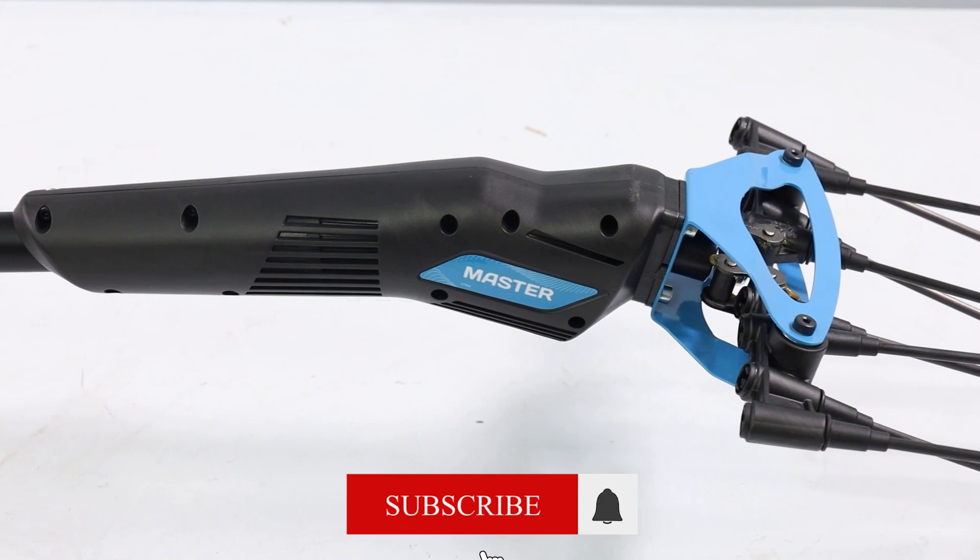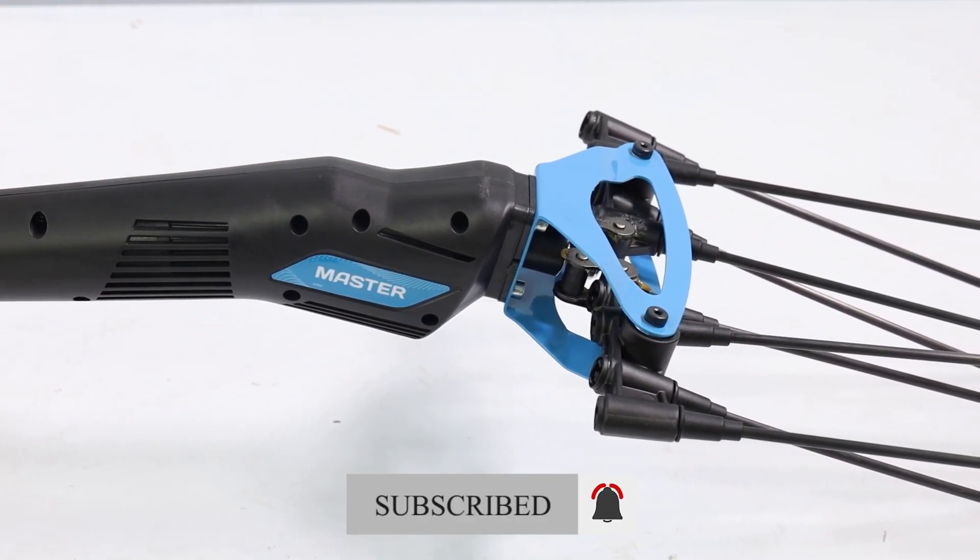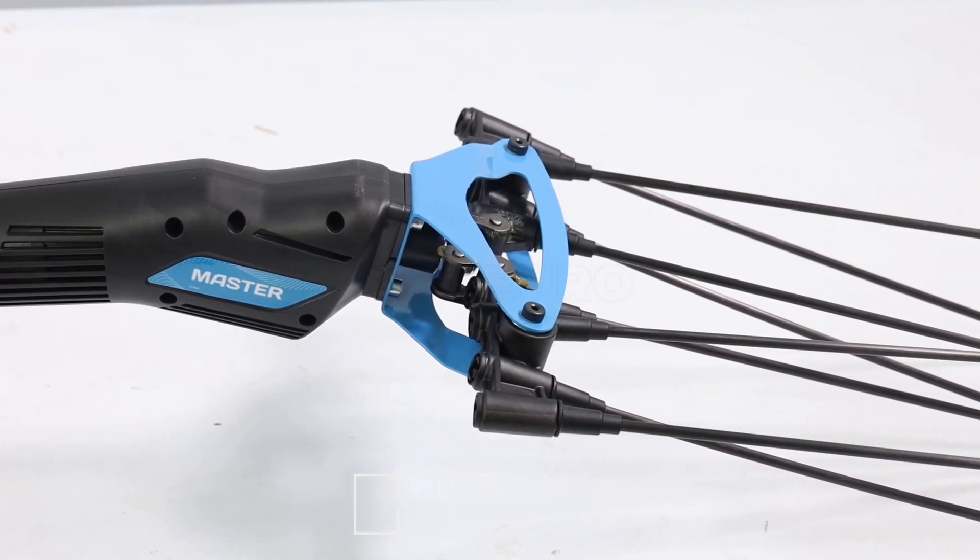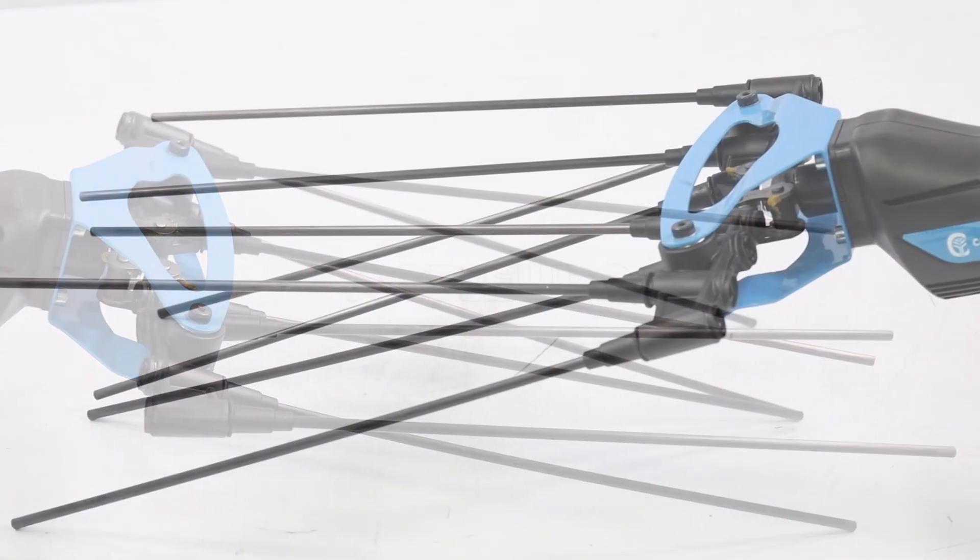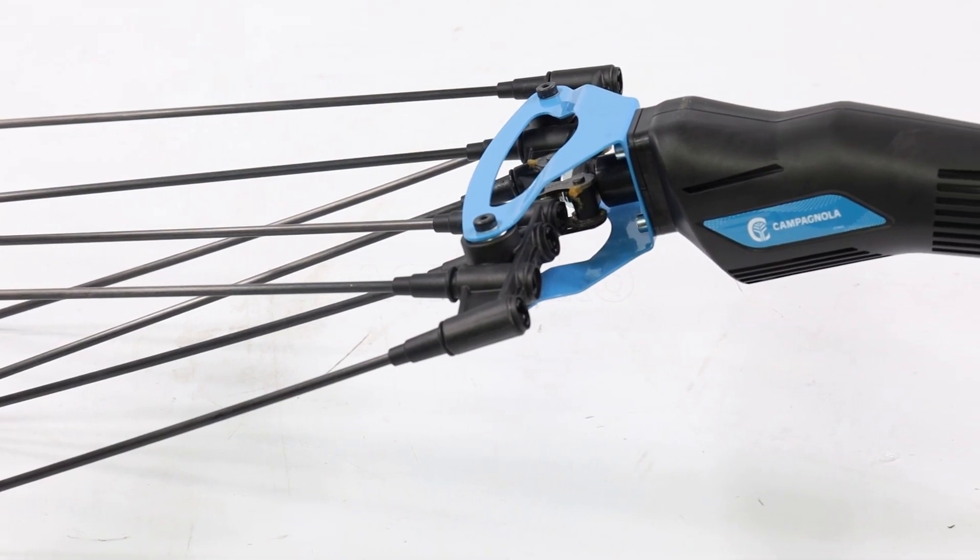This tool is equipped with a telescopic carbon and aluminum pole with an adjustable length ranging from 150 to 220 centimeters, emphasizing its lightweight nature, offering comfortable and easy use.